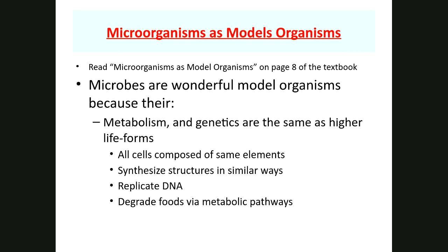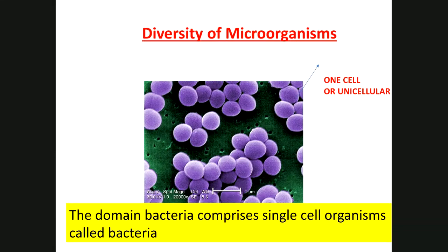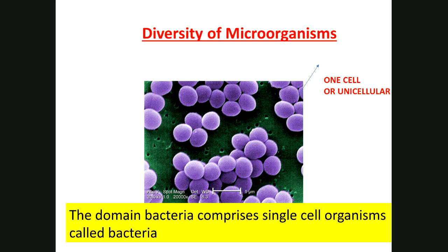Moving on to the second part of chapter one — a survey of microorganisms. First, you need to know the three domains: domain Bacteria, domain Archaea, and domain Eukarya. Bacteria and Archaea have prokaryotic cells, whereas domain Eukarya is made of eukaryotic cells. Prokaryotic is not a domain — it describes a type of cell.